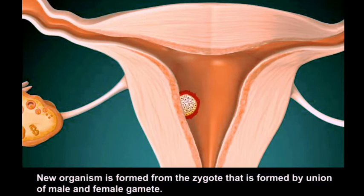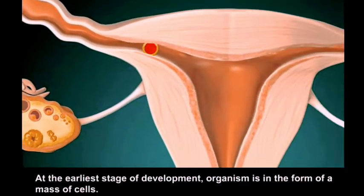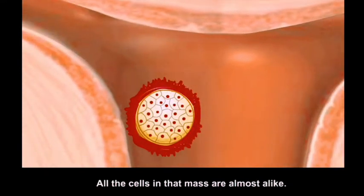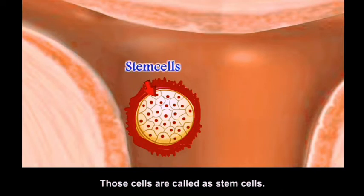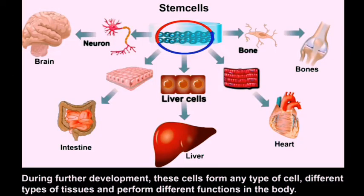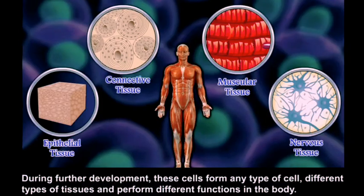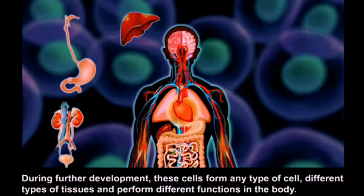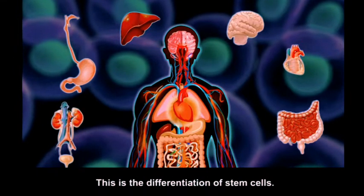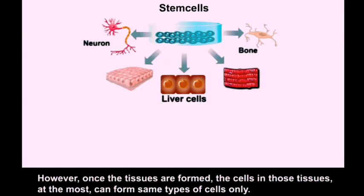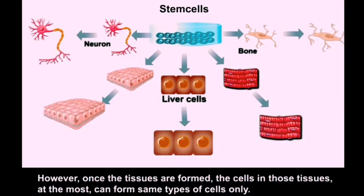A new organism is formed from the zygote, formed by the union of male and female gametes. At the earliest stage of development, the organism is in the form of a mass of cells. All cells in that mass are almost alike and are called stem cells. During further development, these cells form any type of cell, different types of tissues, and perform different functions — this is called differentiation of stem cells.